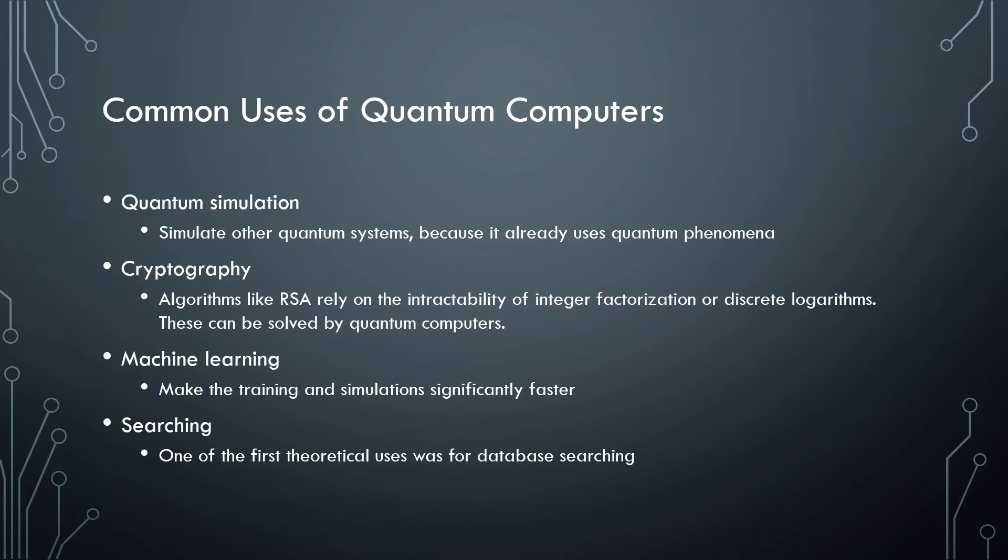The first use I will talk about is quantum simulation. Quantum computers work extremely well for modeling other quantum systems because they are based on the same or similar quantum phenomena. Some examples that can be modeled are complex molecules and photosynthesis.